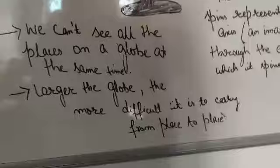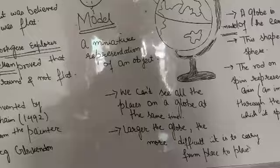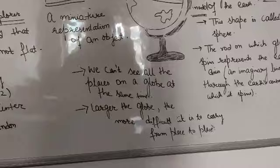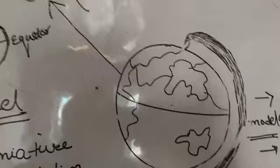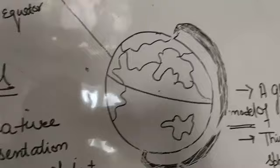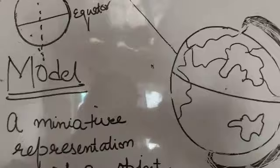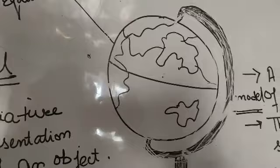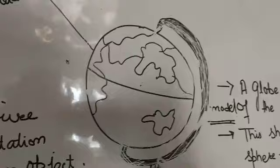The first one is we can't see all the places on a globe at the same time. In maps we can see all the places together, but with globe we have this problem. We cannot see many places at the same time. For example, if this is our globe, we can only see this portion of the globe. The portion behind we cannot see at the same time. But in map, because it's a picture, we can see many countries, many places together.